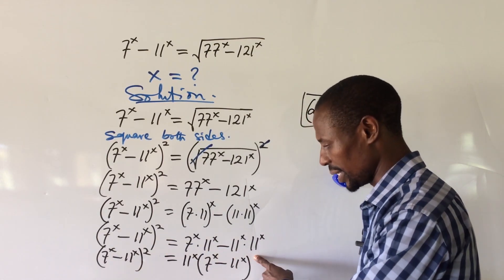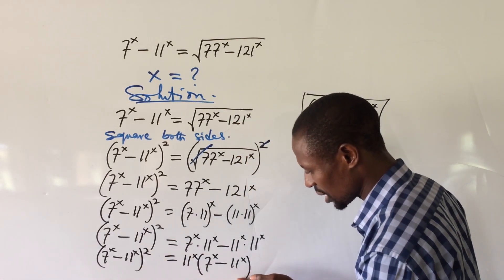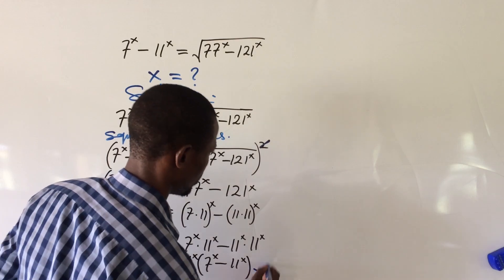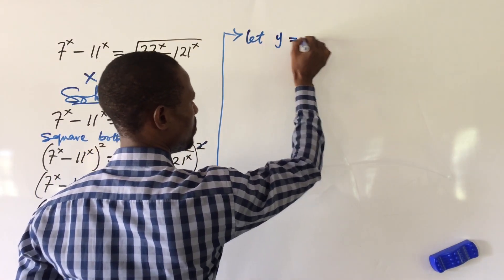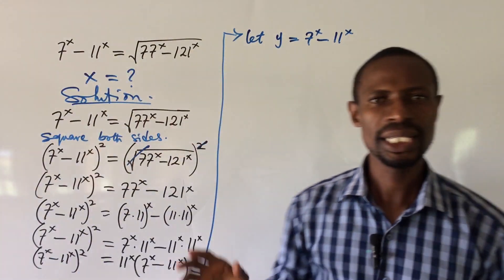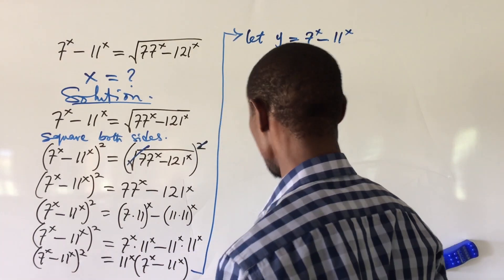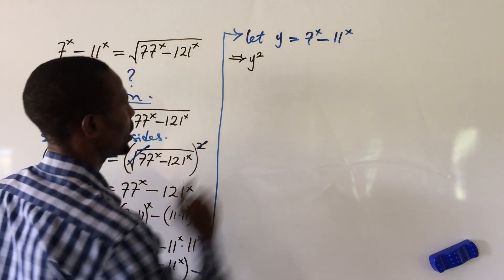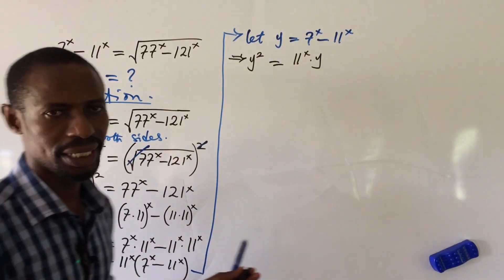Here comes the beauty of the approach. On the left we have 7 to the power of x minus 11 to the power of x, all to the power of 2, and on the right we have that same bracket to the power of 1. I'll introduce a substitution: let y equal 7 to the power of x minus 11 to the power of x. So the equation becomes y squared equals 11 to the power of x times y.